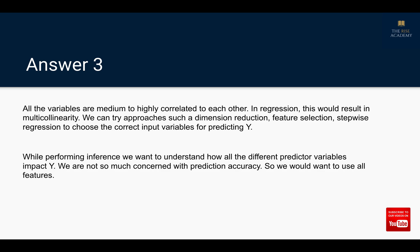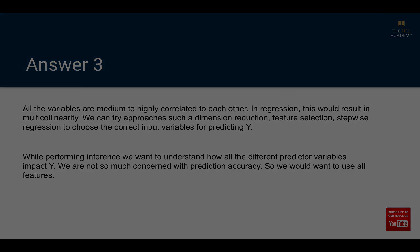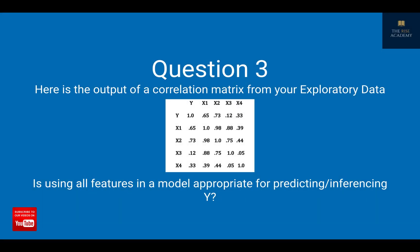For the second part: should we use all these highly correlated input variables for inferencing Y? Predicting Y is different from inferencing Y. In predicting Y, we want Y to be as accurate to its actual value as possible. But when we are doing inference for Y, we want to understand the relationship between Y and all the input variables. We're not really concerned with the predictive power of our model because that's not our goal - our goal is to understand how each variable is impacting Y. So in such a case, we should use all of our input variables because accuracy is not the goal of this kind of problem.